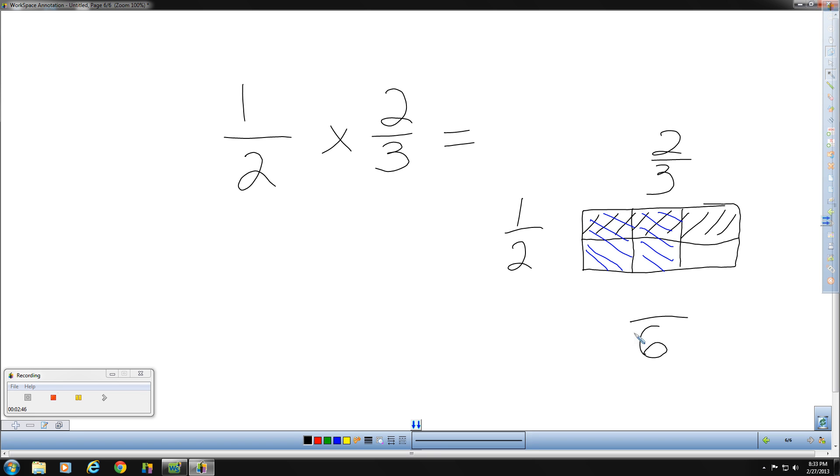With multiplying fractions, what we're actually looking for is the place where they overlap. So, if I'm talking about the area model of this fraction, the overlap is two of the six pieces, or two sixths. If you were going to simplify, that would be one third. So, one half times two thirds is one third.